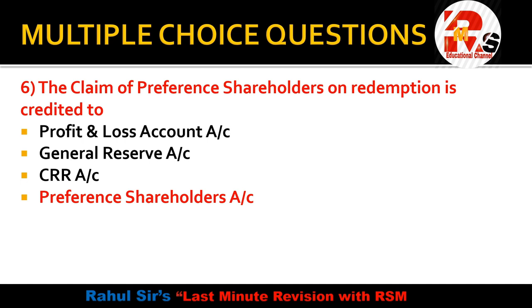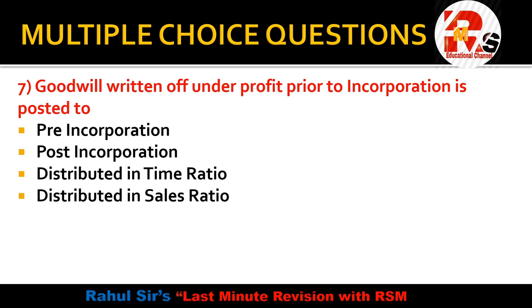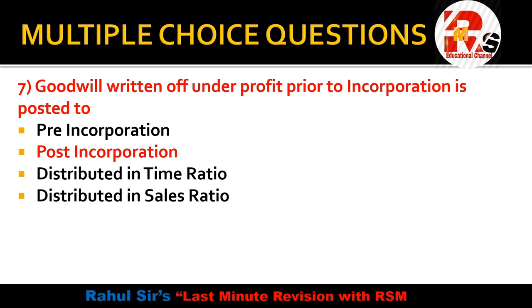Next question: goodwill written off under profit prior to incorporation is posted to — pre-incorporation, post-incorporation, distributed in time ratio, or distributed in sales ratio? In the Profit Prior to Incorporation (PPI) chapter, goodwill written off is always posted to post-incorporation. It is not divided by time ratio or sales ratio. The right answer is post-incorporation.